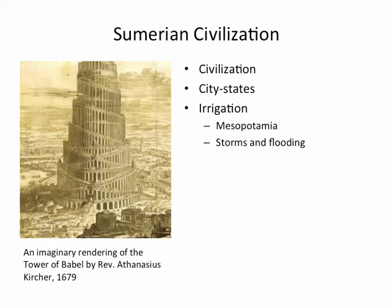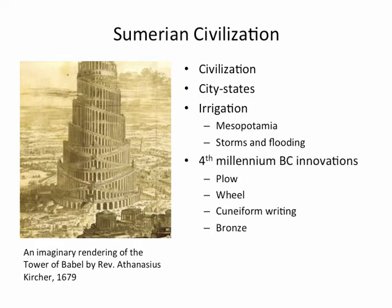It became necessary for the people of this region to develop very complex systems of irrigation to control the floods, to keep floodwaters off the fields at harvest time, and to stockpile water for the beginning of the growing season. It was this complexity of the irrigation system that forced people to cooperate and come together in city-states, and the byproduct was the emergence of this great civilization.